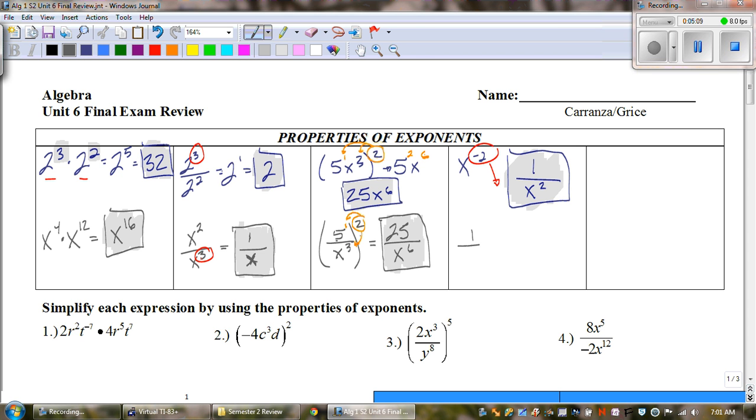So what happens if the exponent's negative on the bottom? Well, if your exponent's negative drop it like it's hot. If it's already on the bottom we bring it to the top. And we would say that that is x squared over 1. But do we really need it to say over 1? No, we don't. So there we go.